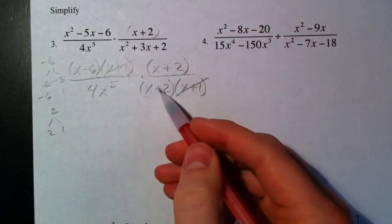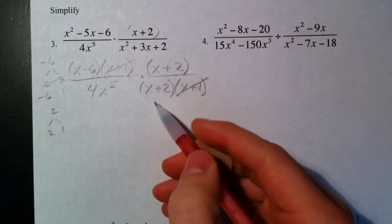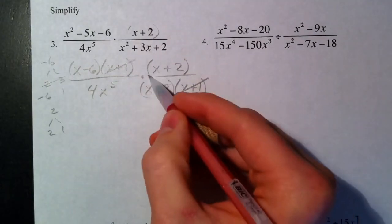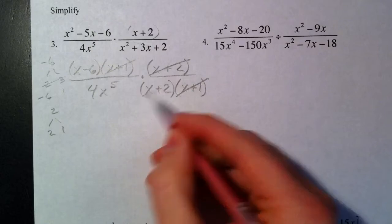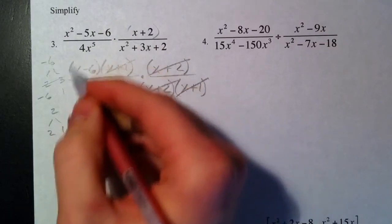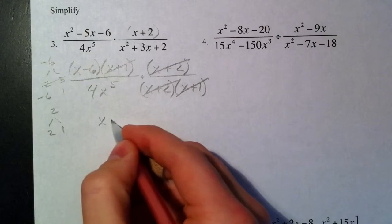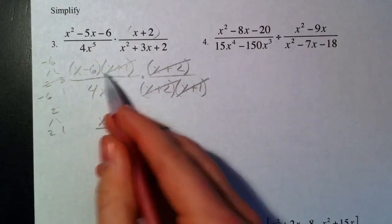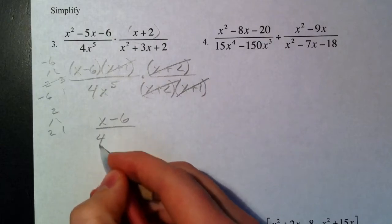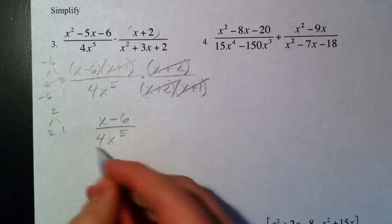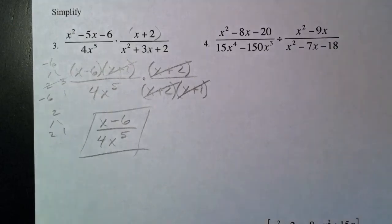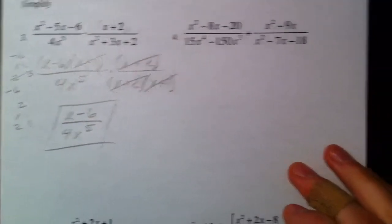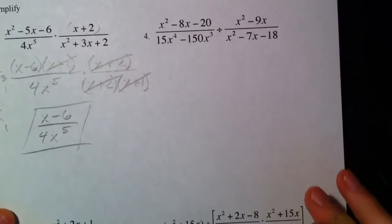And so this X plus 1 divided by the X plus 1 crossed out. X plus 2—these are on the same fraction, and sometimes people ask can we do that? Yeah, it's no problem at all. The first fraction just wasn't fully simplified, so you cross out the X plus 2's. So we're left with just this out front: X minus 6. You don't need the parentheses anymore because it's not multiplied by anything else, and 4X to the fifth.